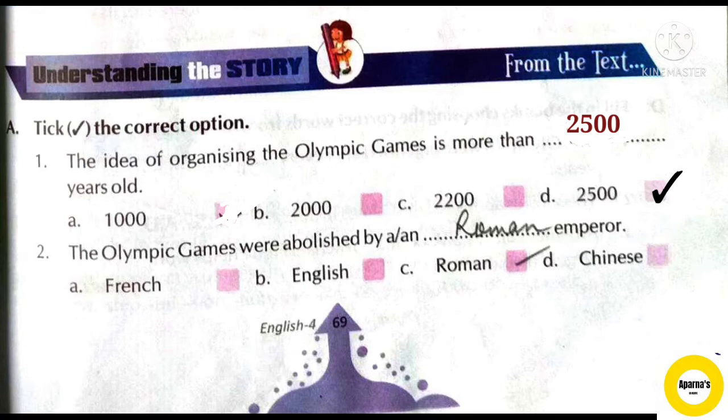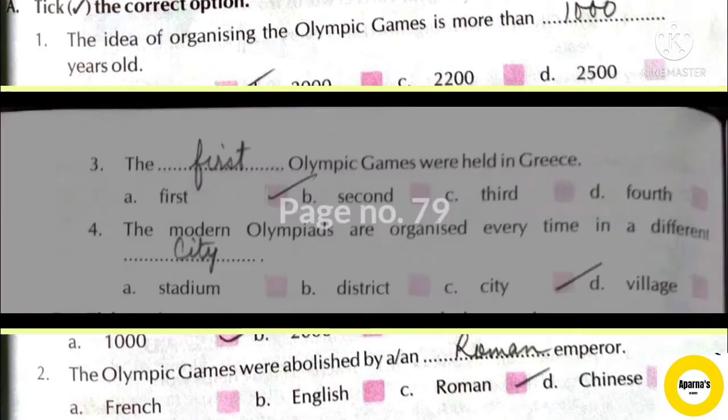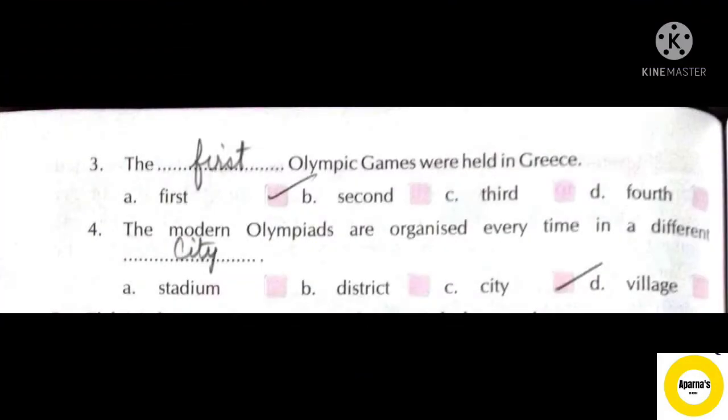Number 2: The Olympic Games were abolished by a ___ emperor. The answer is option C: Roman. The Olympic Games were abolished by a Roman Emperor. Number 3: The ___ Olympic Games were held in Greece. The answer is option A: First. The first Olympic Games were held in Greece.